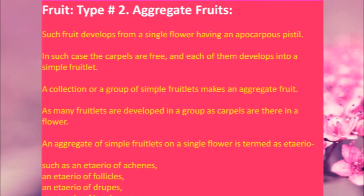Now, aggregate fruits. Such fruits develop from a single flower having an apocarpous pistil — where pistil is the style, stigma, and ovary together. The carpels are free, and each one develops into a simple fruitlet. A collection or group of simple fruitlets makes an aggregate fruit. As many fruitlets are developed in a group as there are carpels in a flower. An aggregate of simple fruitlets on a single flower is termed an etario — such as etario of achenes, etario of follicles, etario of drupes, and etario of berries.